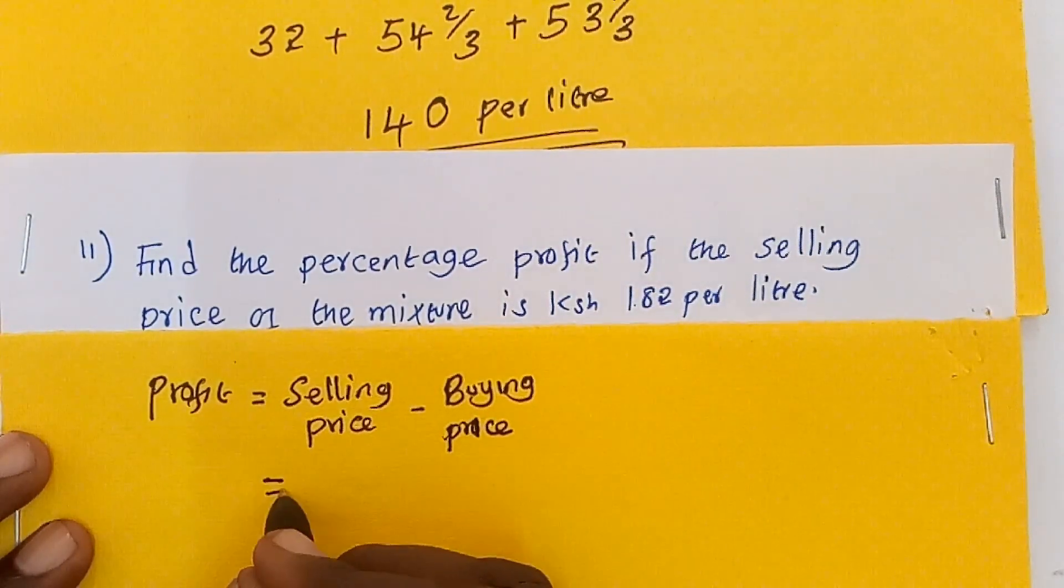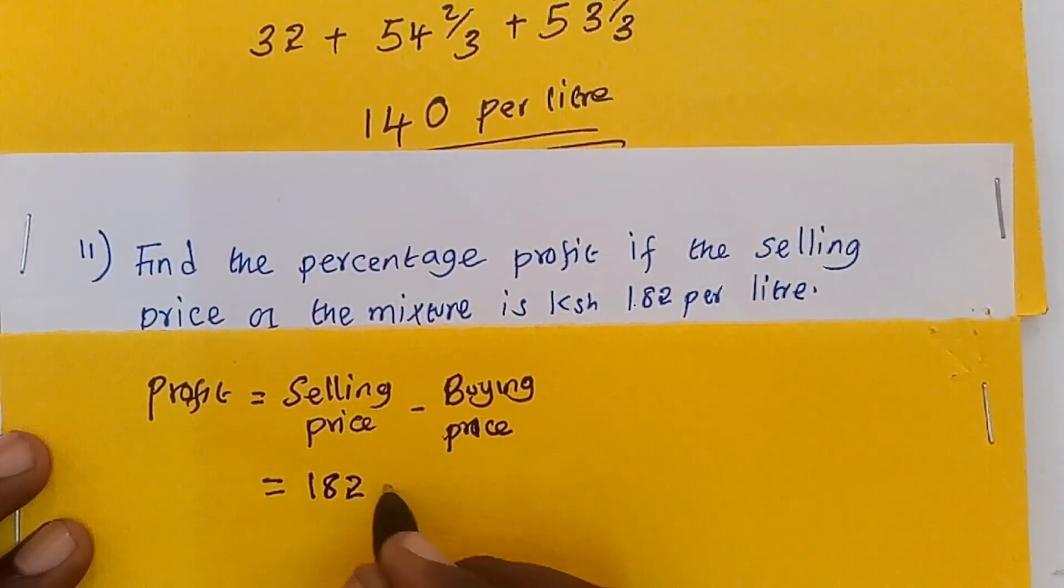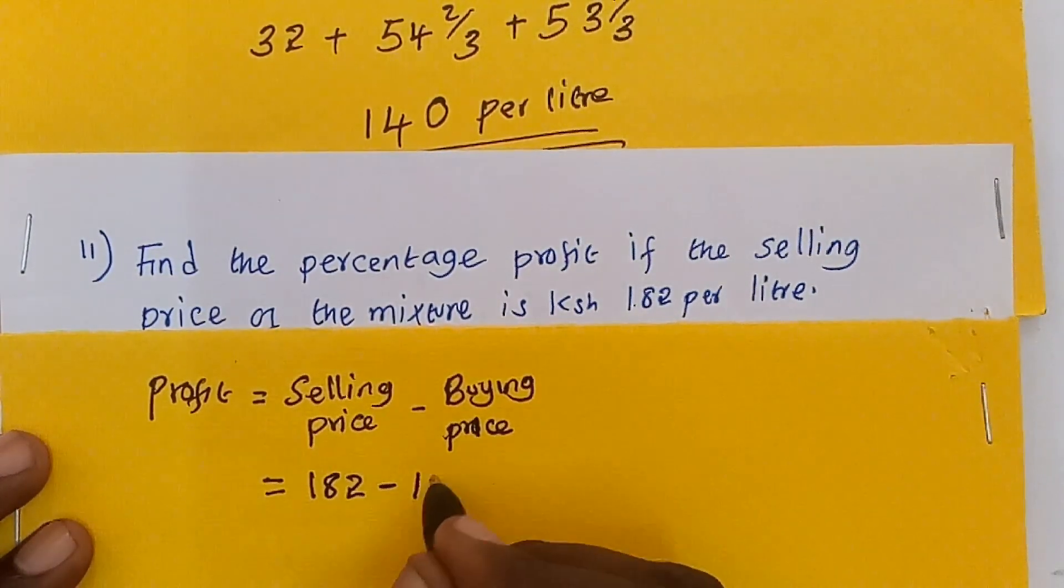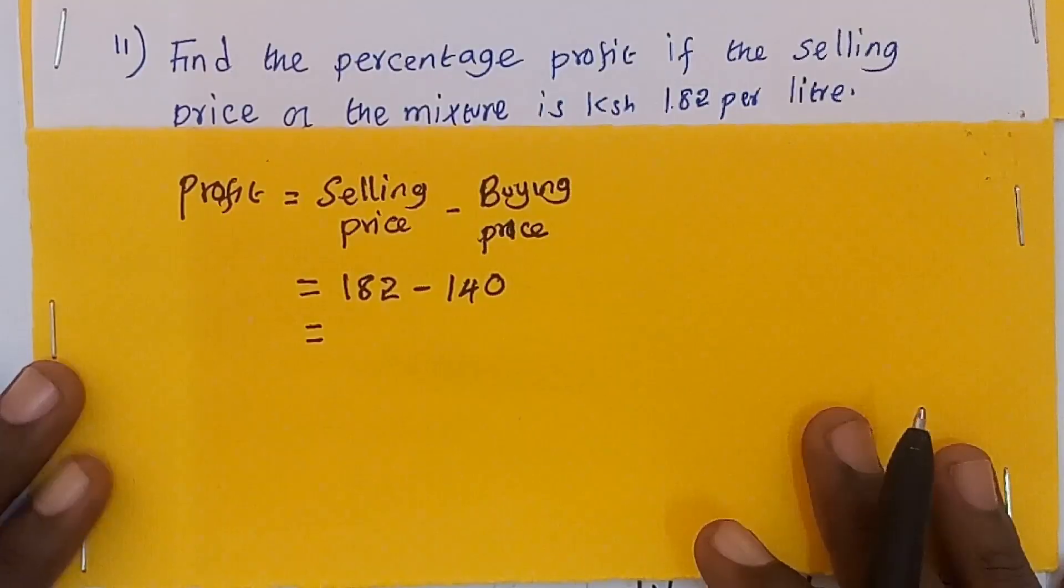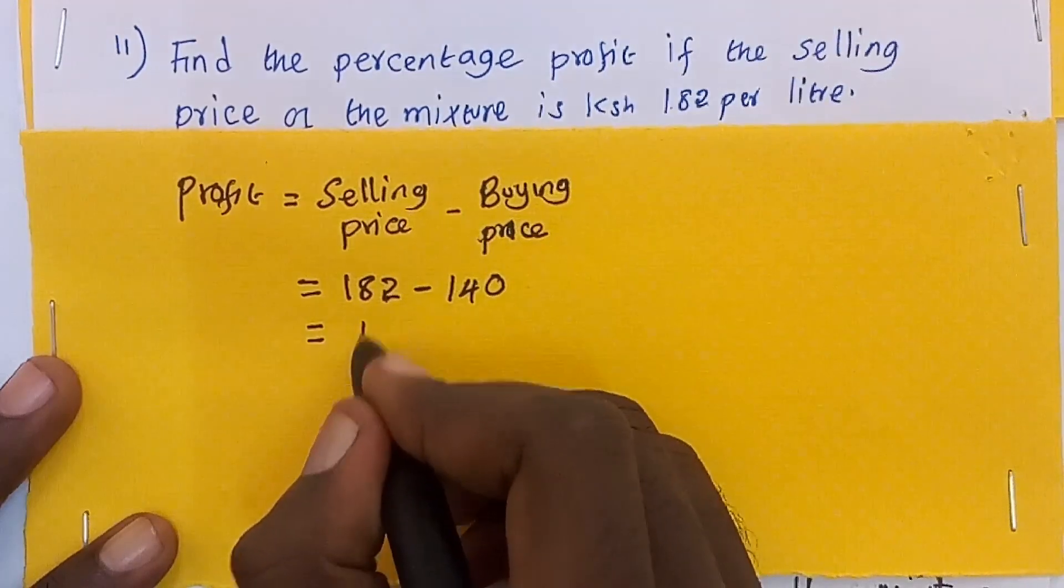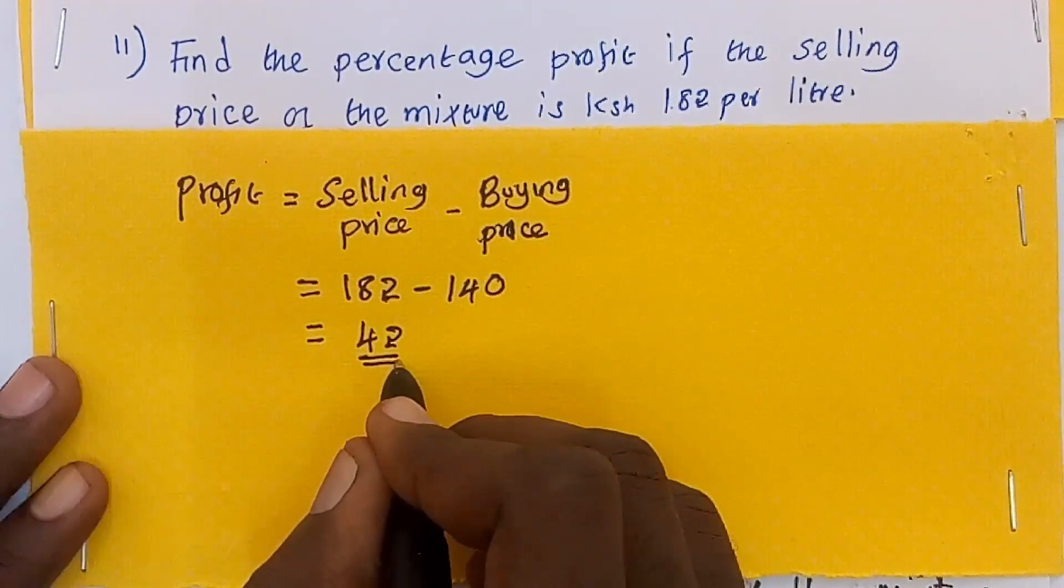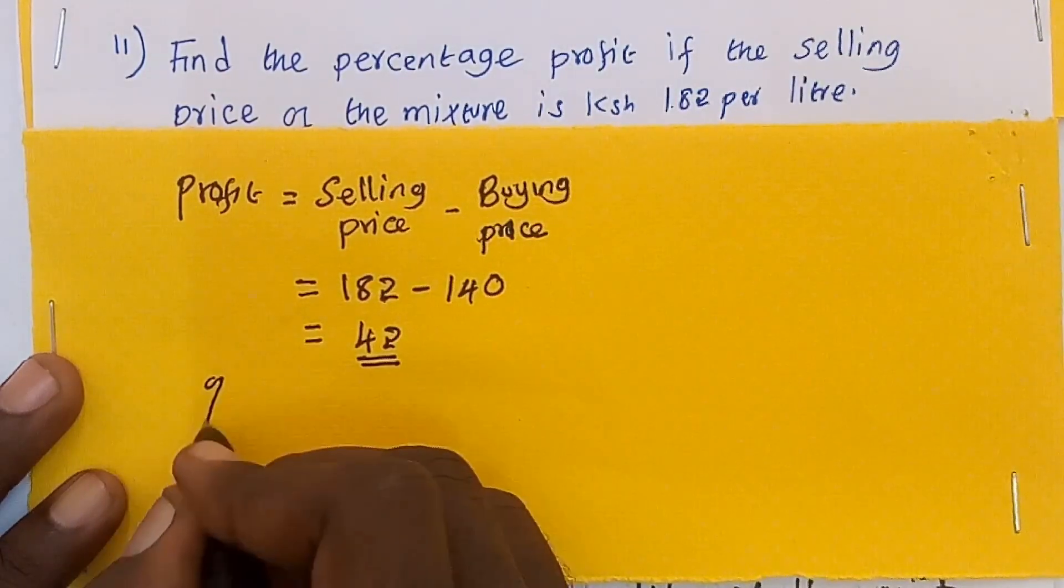Selling price, we have 182, minus the buying price which is 140 per liter. 182 minus 140, we get 42 shillings as our profit. But we were asked to get percentage profit.